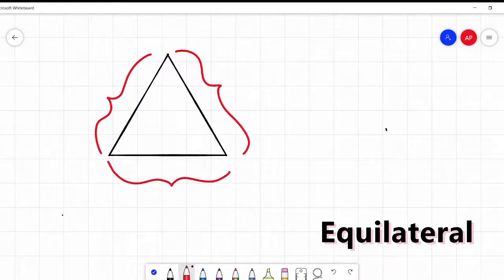They're all the same. If this side is four inches, then this side is four inches. Also, this side is four inches. Equilateral - a good way to remember this is that first part of the word, equilateral, sounds like equal. Three equal sides.